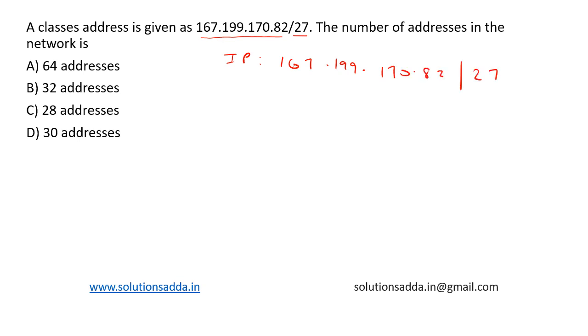In a classful addressing system, the whole network is divided into five classes that includes class A, B, C, D, and E. But in a classless addressing system, there is no such division, and this slash notation followed by number represents the number of mask bits.